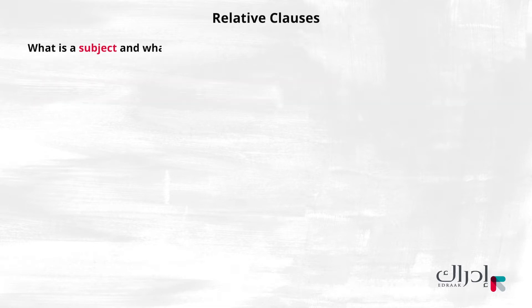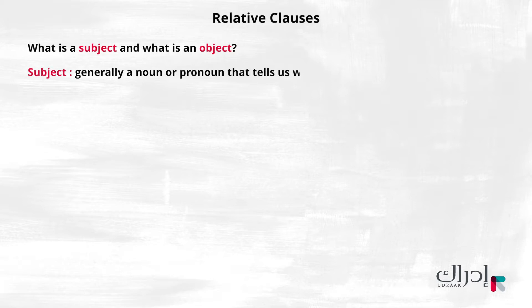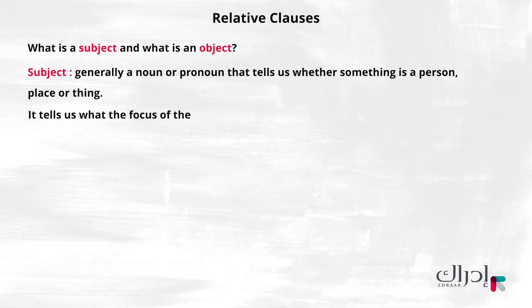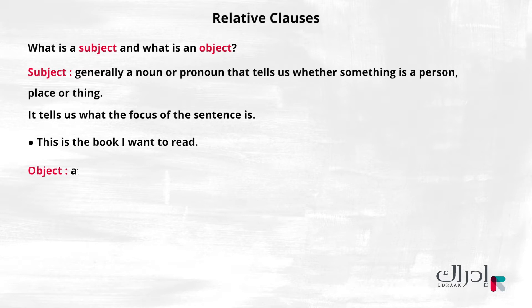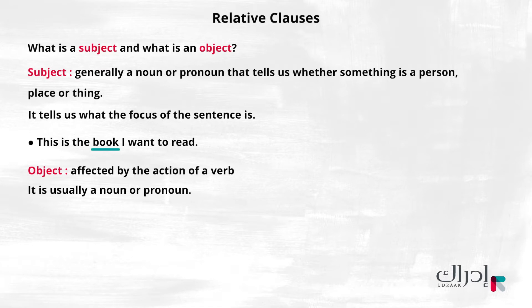Let's refresh your memory. What is a subject and what is an object? Simply put, a subject is generally a noun or pronoun that tells us whether something is a person, place, or thing. It tells us what the focus of the sentence is. Look at this example: 'This is the book I want to read.' In a sentence, an object is affected by the action of a verb. It is usually a noun or pronoun. In the example, 'book' is the object. The verb here is 'read.'